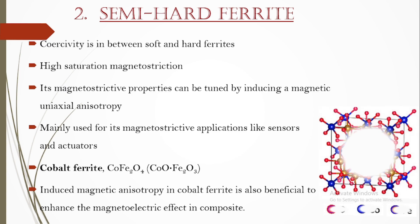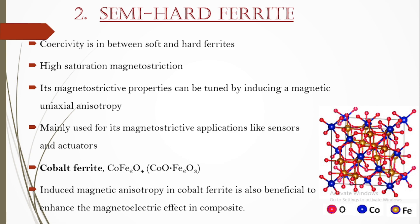The most common example of a semi-hard ferrite is cobalt ferrite, in which the induced magnetic anisotropy is also beneficial to enhance the magneto-electric effect in the composite. Observing cobalt ferrite's general formula MFe₂O₄, we can clearly say it exhibits a spinel structure. So cobalt ferrite is an example of both a semi-hard ferrite and a spinel ferrite.